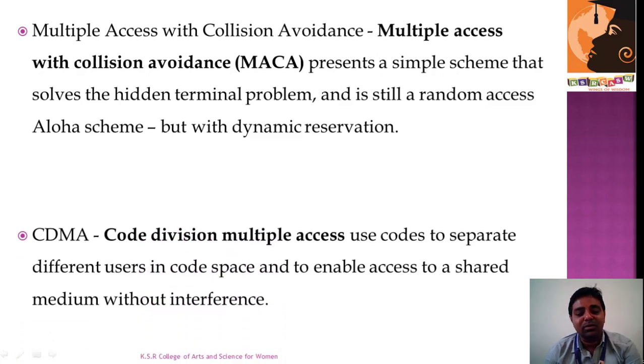For CDMA, Code Division Multiple Access uses codes to separate different users in code space and to enable access to a shared medium without interference. These codes are spread over frequencies, and each code executes at its given time so users can send data.